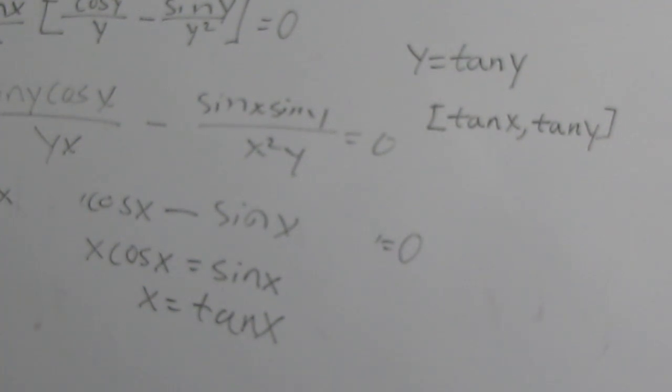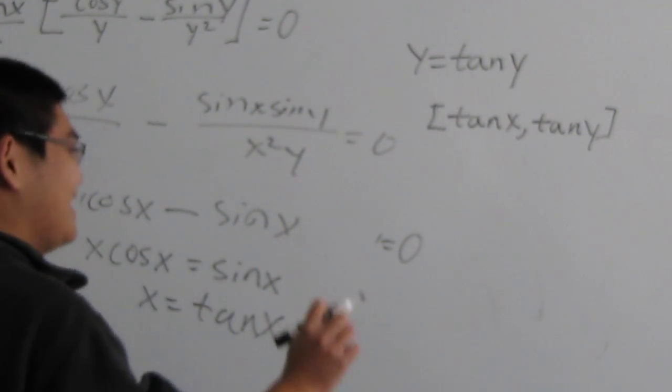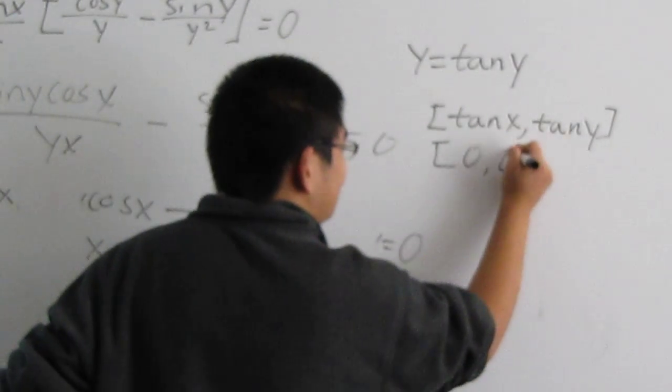Since sine of 0 is equal to 0... I mean tangent of 0 is equal to 0. It's one of the solutions. So 0 comma 0.